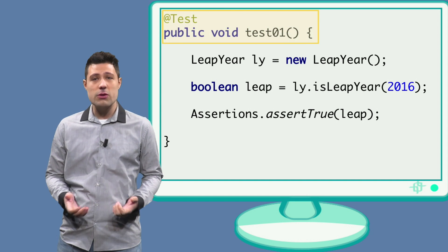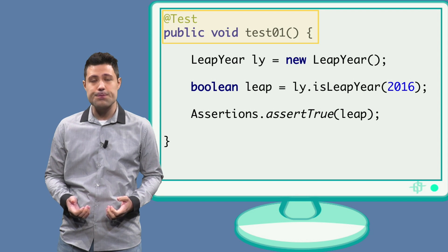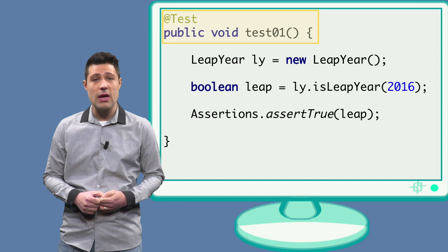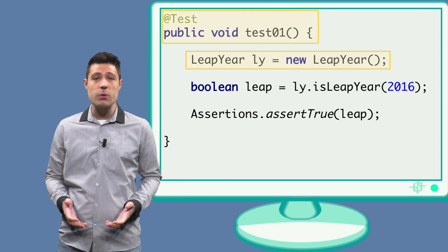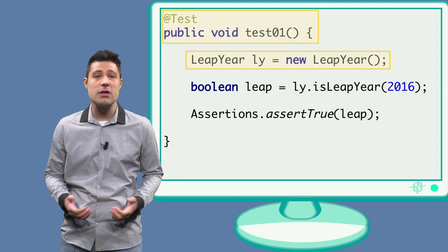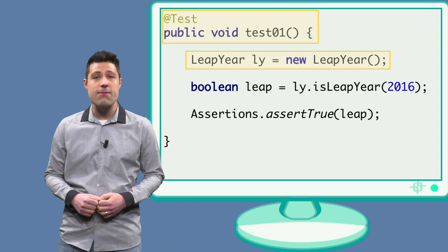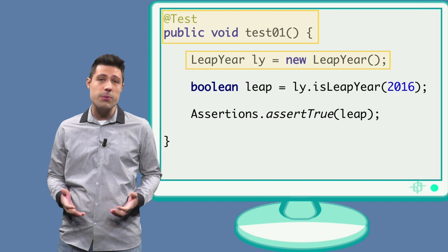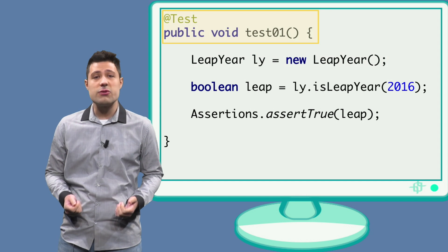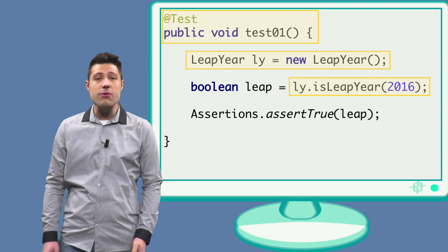The method should always be public. Let's name it test1. The first thing we should do in our test is to instantiate the class we want to test — or as we call it, the class under test. In this case, this li variable contains a new LeapYear object.